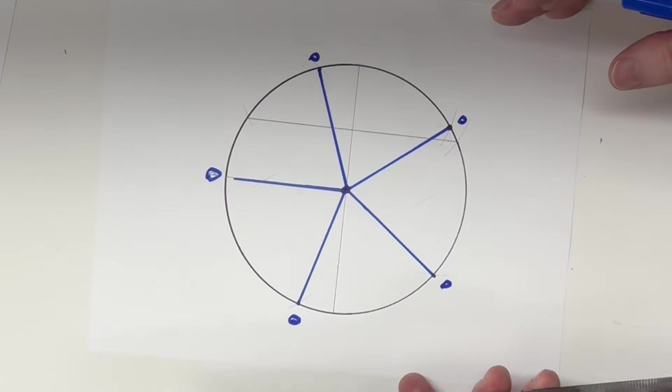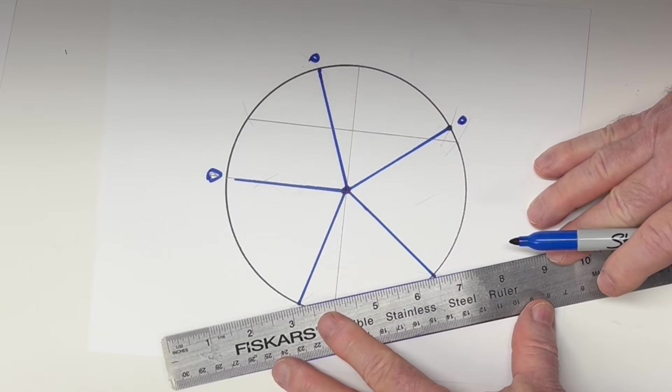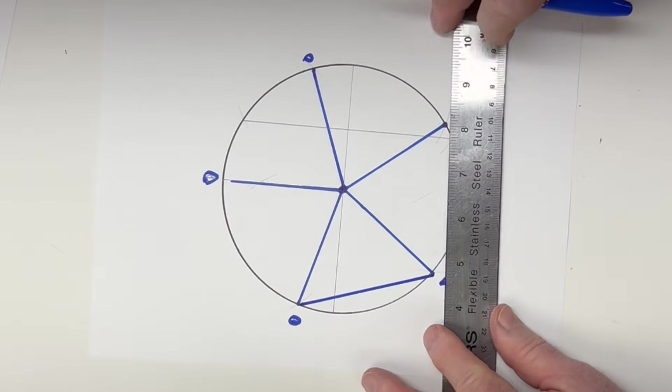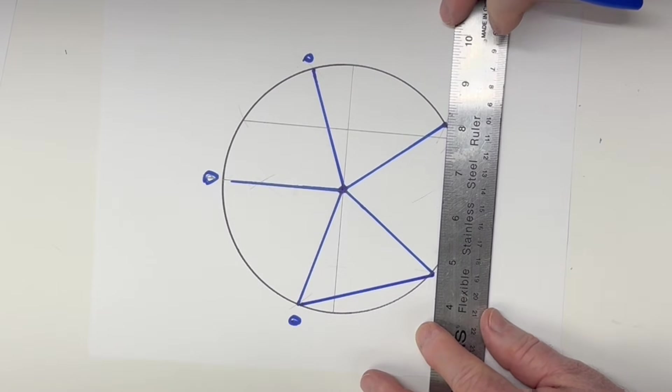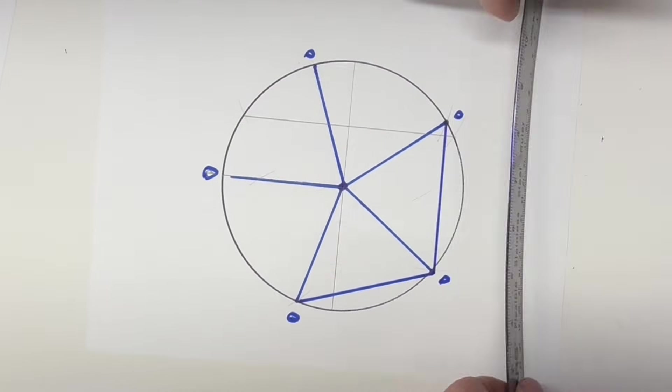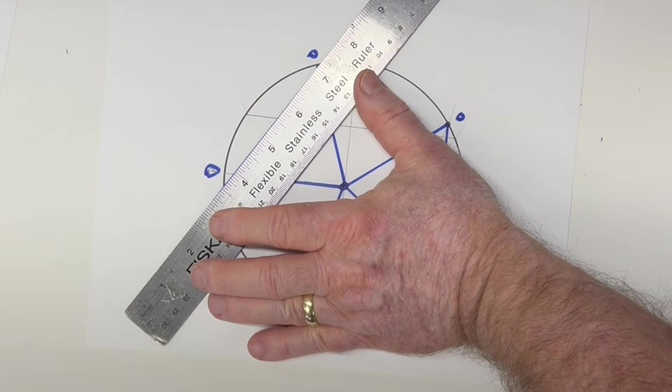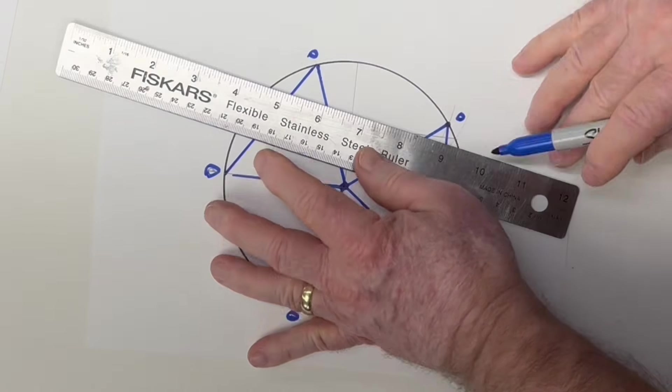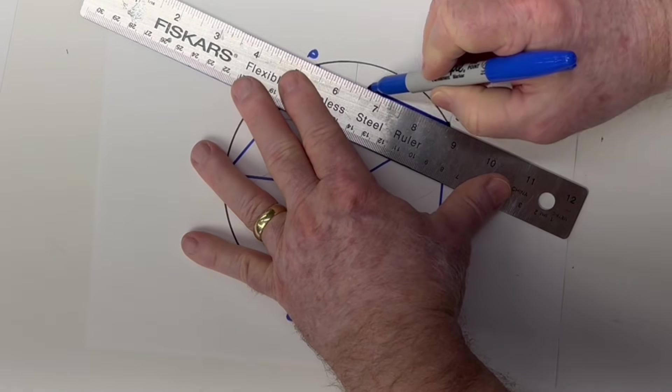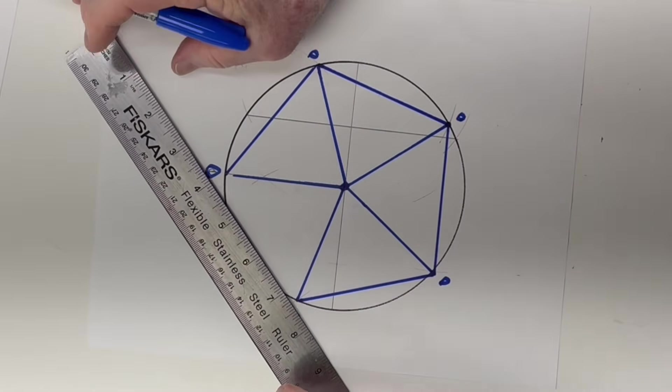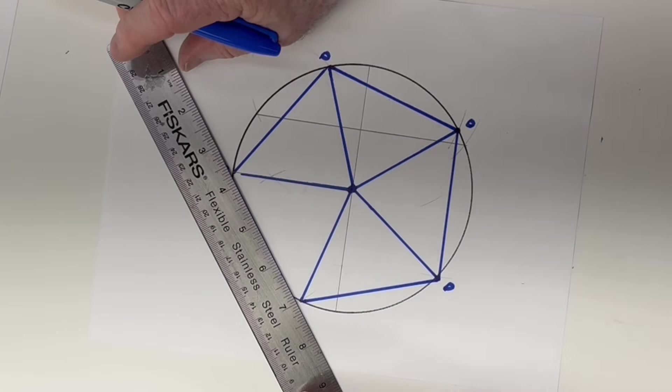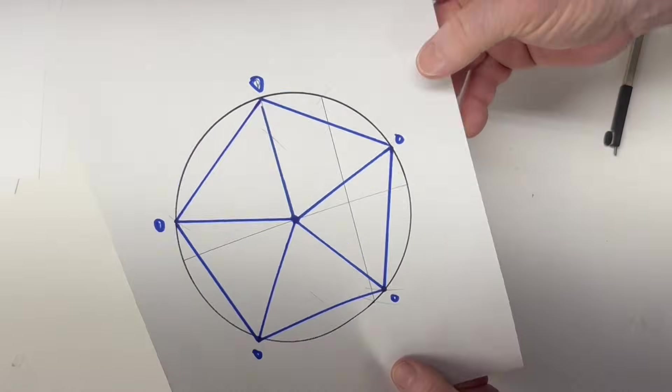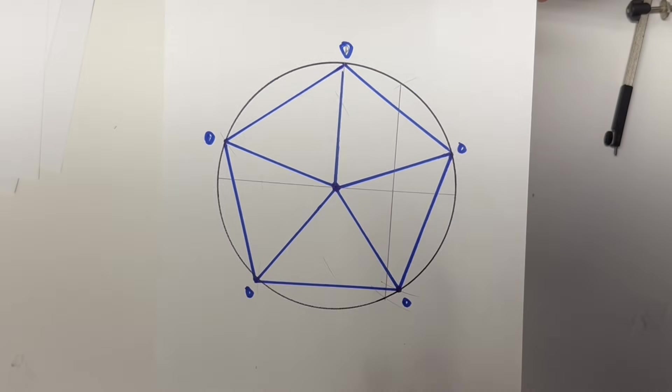If you want to make that into a pentagon, just connect these two lines. This is the cord here. And the last one. That's how you divide the circle into five equal parts.